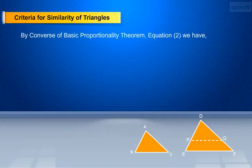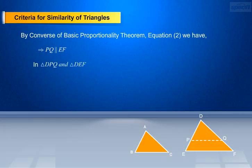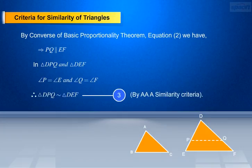By the converse of the basic proportionality theorem, from equation 2 — that is DP/PE equals DQ/QF — we have PQ is parallel to EF. From triangle DPQ and triangle DEF, we have angle P equals angle E and angle Q equals angle F, since they are corresponding angles, and angle D equals angle D as a common angle. By the AA similarity criteria, we can say that triangle DPQ is similar to triangle DEF — make it equation 3.